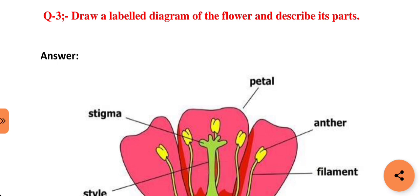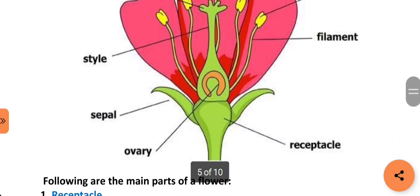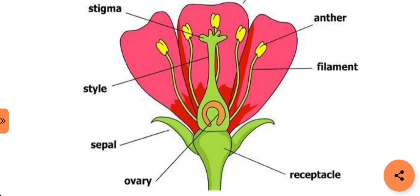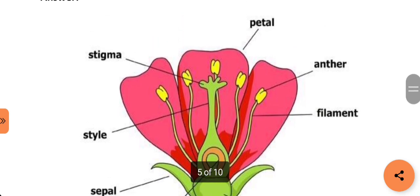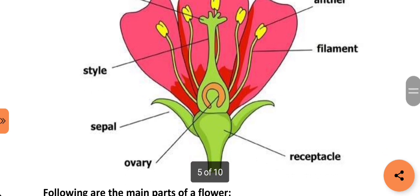Our next question is: draw a labelled diagram of the flower and describe its parts. Different parts of the flower shown in the diagram are: receptacle, filament, anther, petal, stigma, style, sepal, and ovary.